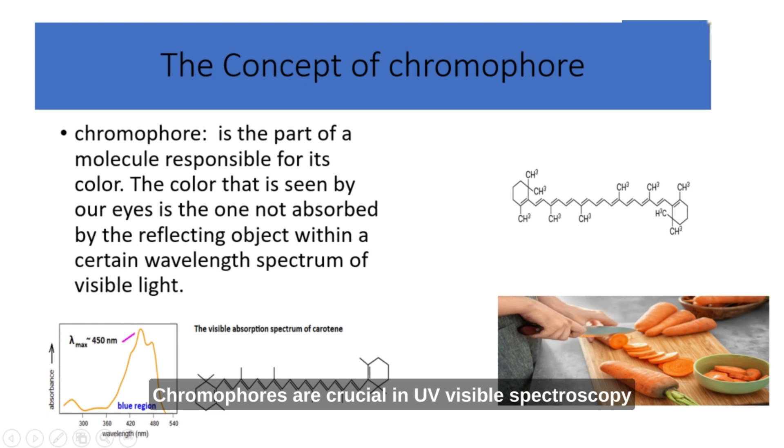Chromophores are crucial in UV-visible spectroscopy because they are responsible for light absorption in the ultraviolet (UV) and visible regions of the electromagnetic spectrum. The presence of chromophores in a molecule determines its ability to absorb light at specific wavelengths. Different chromophores have characteristic absorption spectra, meaning they absorb light at specific regions of the UV-visible spectrum. By analyzing the absorption pattern, scientists can identify the type of chromophore present and gain insights into the structure and nature of the molecule.